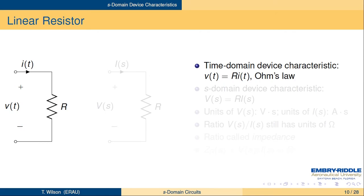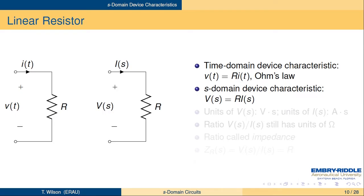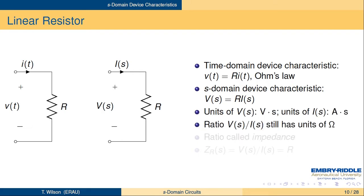For the resistor, we have Ohm's law: V of T equals R times I of T. We transform both sides to get cap V of S equals R times cap I of S — Ohm's law in the Laplace domain. Units of voltage are volt-seconds, units of current are amp-seconds, so when we take the ratio the seconds cancel out and we're left with units of ohms. But instead of calling that resistance, we're going to call it impedance, because with the capacitor and inductor we get complex values — as you've seen previously in phasor analysis in the sinusoidal steady state. So the impedance of the resistor is R.